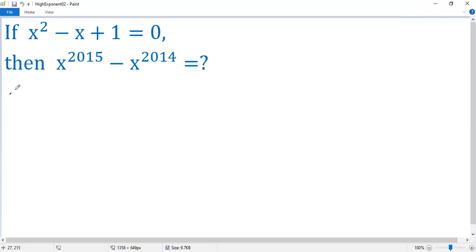1 plus minus square root of b squared minus 4ac divided by 2a. So we get 1 plus minus square root of 1 minus 4, negative 3 over 2.